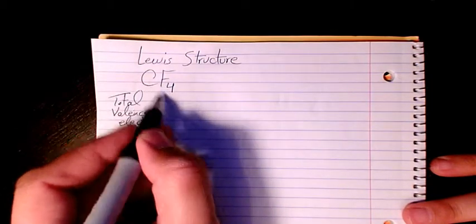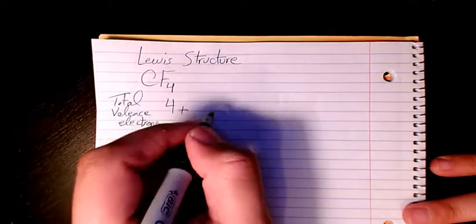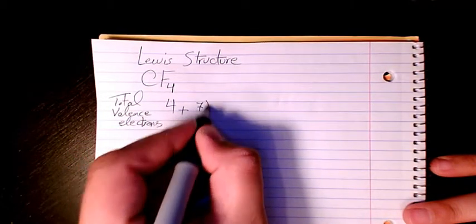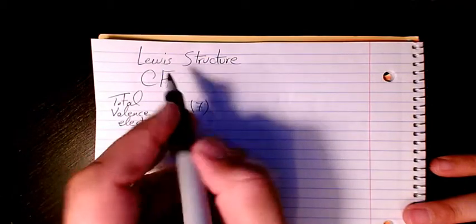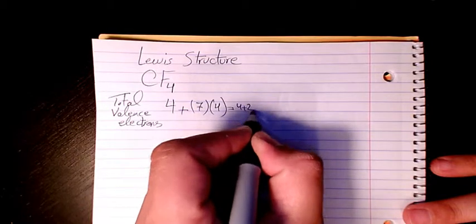C belongs to group 4, so it has four valence electrons, and fluorine belongs to halogen group, so seven electrons in the valence shell. We have four of them, so it's gonna be 4 plus 28, which is gonna be 32.